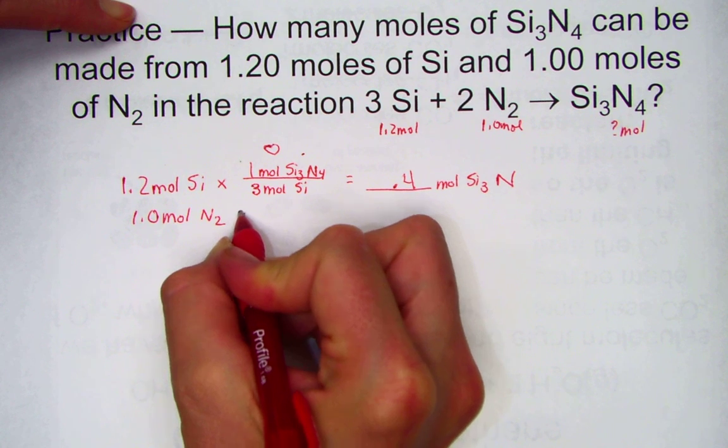Oxygen limits the amount of product. It's called the limiting reagent. It's the smaller of my two answers. Methane, therefore, was the excess reagent. It was not consumed completely in the reaction.